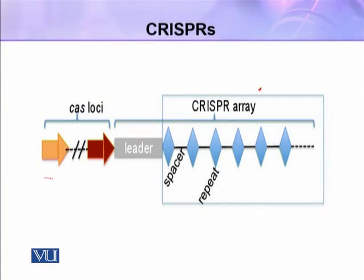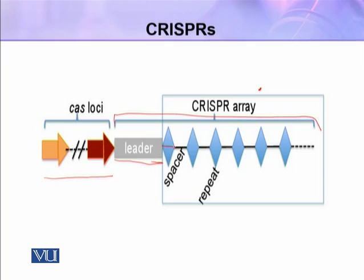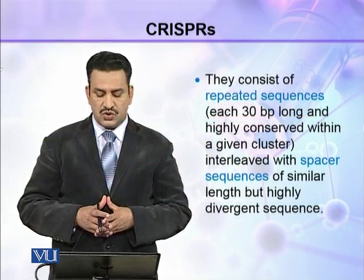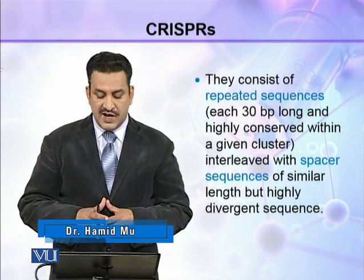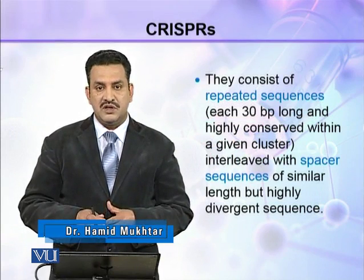In the CRISPR locus, there is a Cas gene region followed by the CRISPR array. The CRISPR array contains a leader sequence, followed by a repeated pattern of repeat, spacer, repeat, spacer, repeat. These repeated sequences are each about 30 base pairs long and highly conserved within a given cluster.